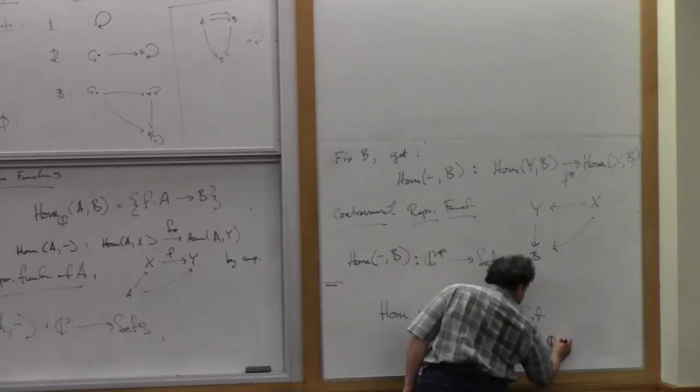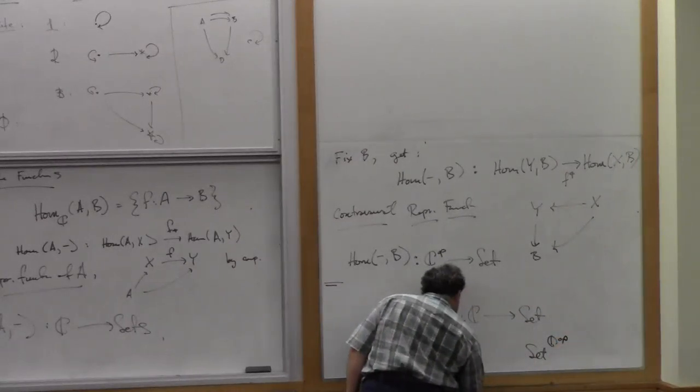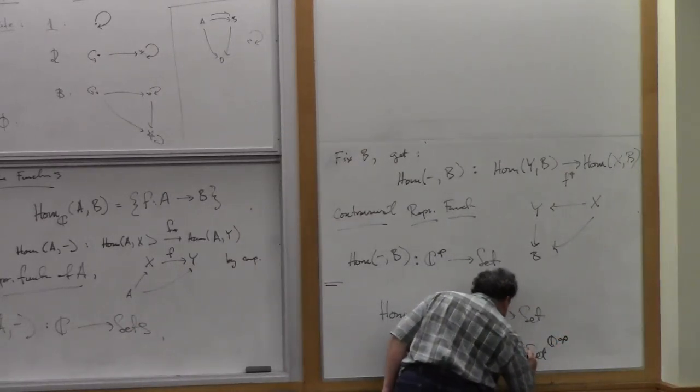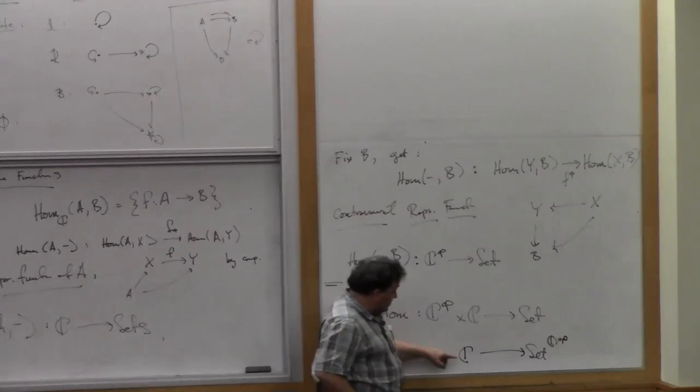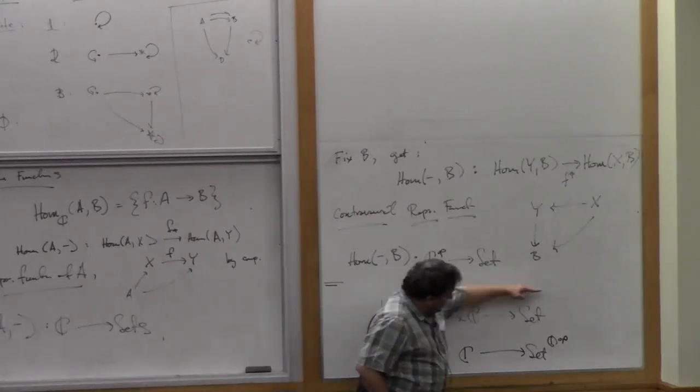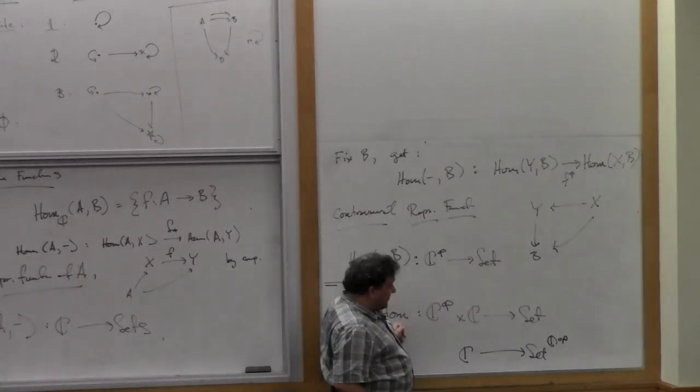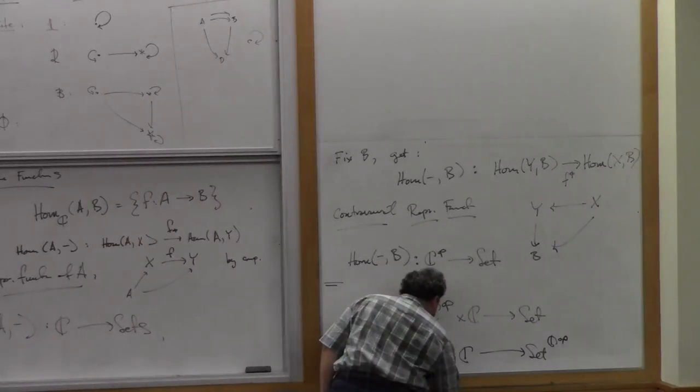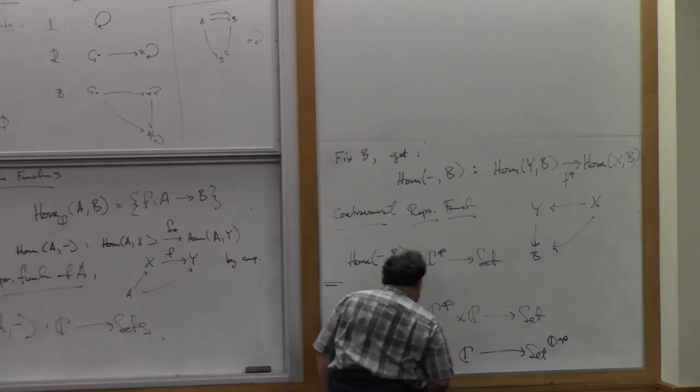And then we'll see that we can have contravariant functors, and we can have C itself maps by this operation. It's basically the currying of this HOM functor, and that's an important map called the Yoneda embedding.